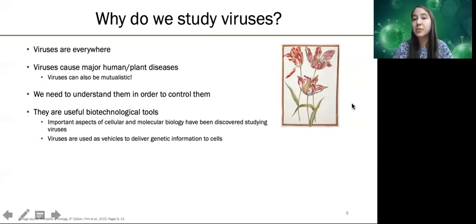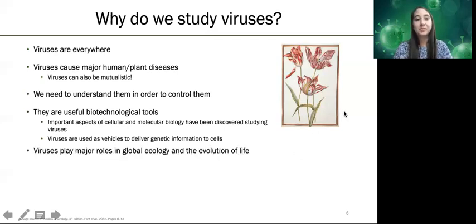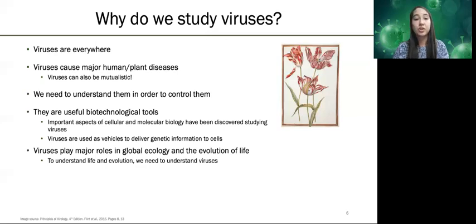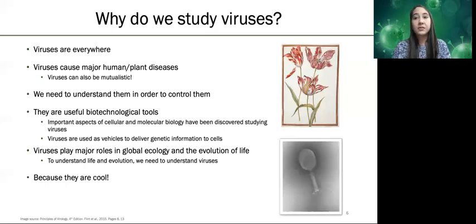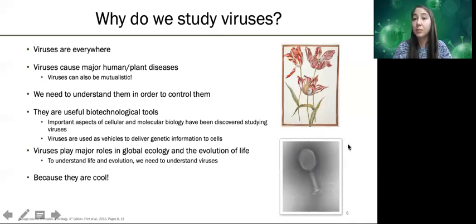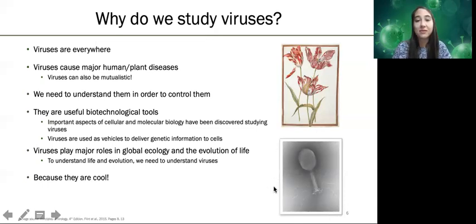This is a picture of tulips infected with a virus that were very famous in Europe and were thought to have almost caused a huge economic crisis. Viruses play major roles in global ecology and the evolution of life, so in order to understand life and evolution itself, we need to understand how viruses work. And if I haven't convinced you yet, we should just study them because they're very cool — you can see here an electron microscopy image of a phage, a virus that infects bacteria, which I always say is one of my favorite images in all of science.